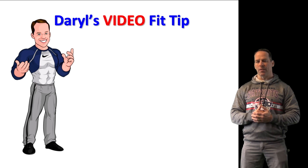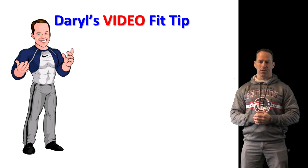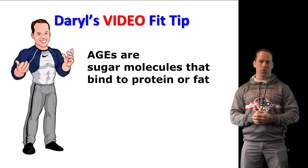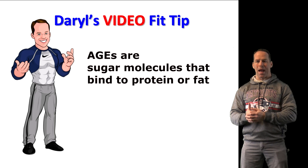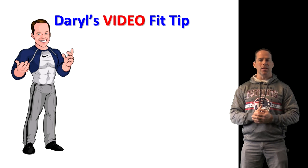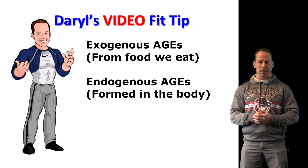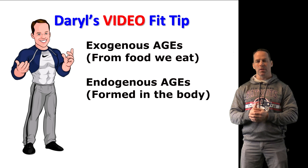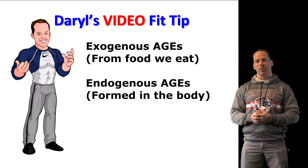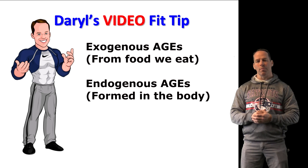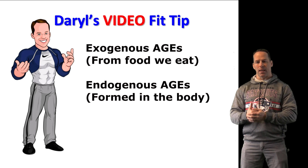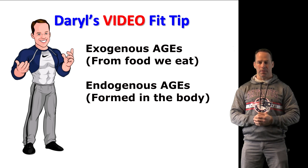AGEs are a result of glycation reactions — the scientific term for sugar molecules binding to proteins or fats. AGEs enter the body through the foods we eat, known as exogenous AGEs, and they can also be produced by our own metabolism, called endogenous advanced glycation end products.